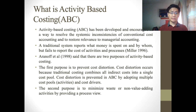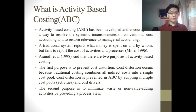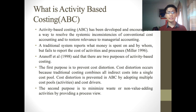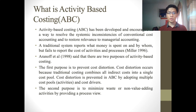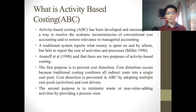According to Aranov Eyal in 1998, there are two purposes of Activity-Based Costing. The first one is to prevent cost distortion. Cost distortion occurs normally because traditional costing combines all indirect costs into a single cost pool, making it very easy to do but also inaccurate. Cost distortion is prevented in ABC by adopting multiple cost pool activities and cost drivers, making it way more accurate, albeit harder to do.